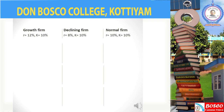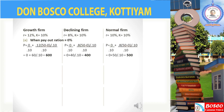First, when payout ratio is equal to 0%: for a growth firm, the market price is ₹600; for a declining firm, the market price is ₹400; and for a normal firm, the market price is ₹500.